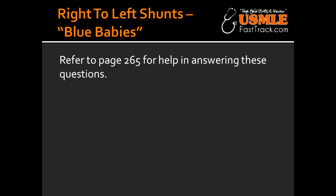What is persistent truncus arteriosus? Persistent truncus arteriosus is a condition where there is a failure of the truncus arteriosus to divide properly into the pulmonary trunk and the aorta.